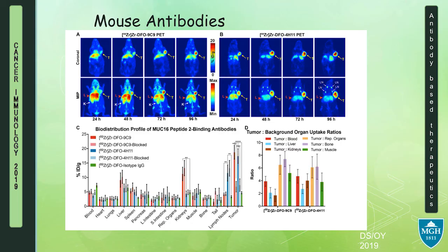The difference between these two antibodies — both targeting MUC16 — is that the rate of internalization or recycling of the antigen is very different based on where each antibody binds, though there isn't enough time to fully discuss that today.